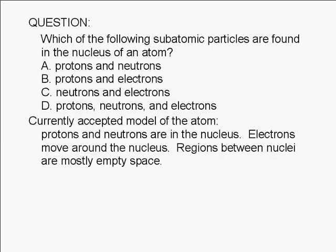In the currently accepted model of the atom, protons and neutrons are in the nucleus, while electrons move in the mostly empty space outside the nucleus. The correct answer is A.